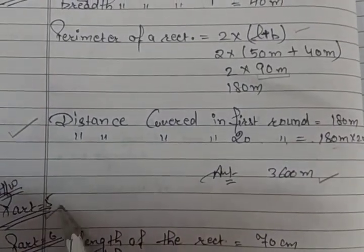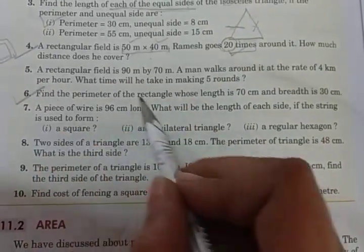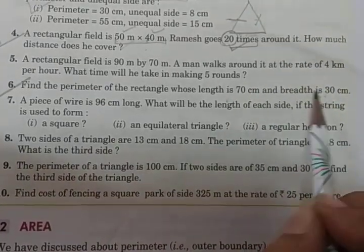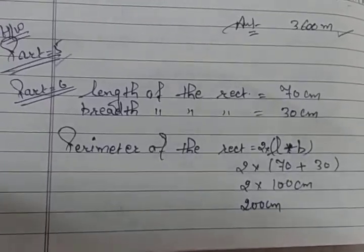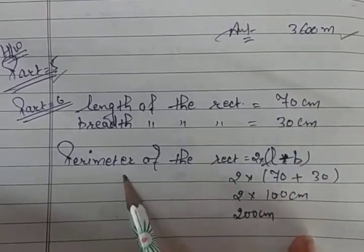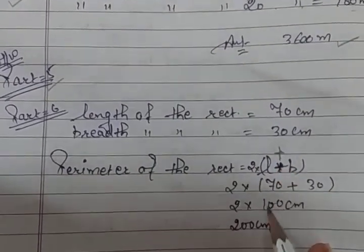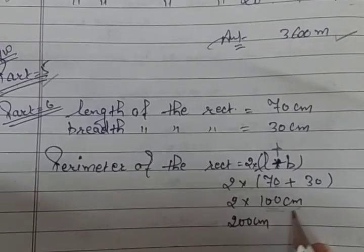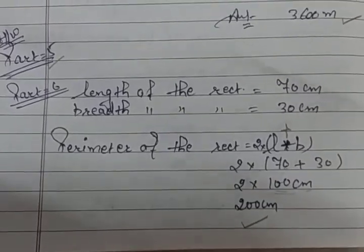Question number 5 is for your practice. In question 6 also, find the perimeter of the rectangle whose length and breadth are given. You have length and breadth and you have to put the formula of perimeter: 2 multiplied by (length plus breadth). Put in the values and calculate.